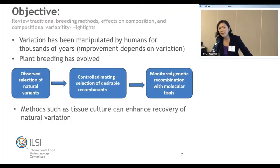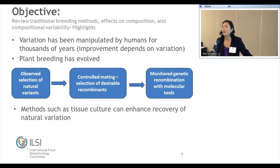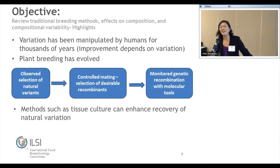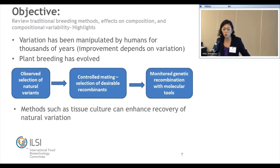How we achieve this might be slightly different. These are just some highlights from the different talks. We heard about variation and how it's been manipulated by humans for thousands of years. There's a question of whether the first breeders were women or possibly children — I'll leave you to figure that out. We also heard how plant breeding has evolved, from observed selection of natural variants to controlled mating, and now to monitoring genetic recombination with molecular tools such as marker-assisted selection.